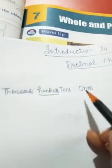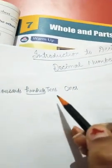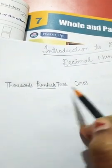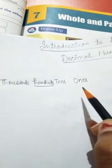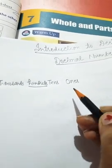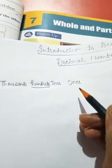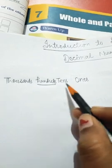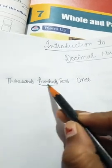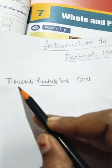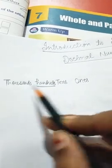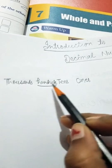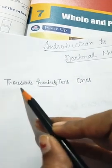You are very much familiar with this system of numbers. As we are doing it from the last 2 to 3 years: ones, tens, hundreds, thousands. Yes, ones, tens, hundreds, thousands.